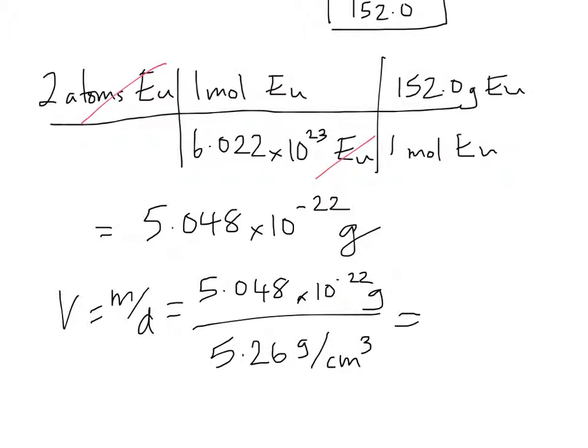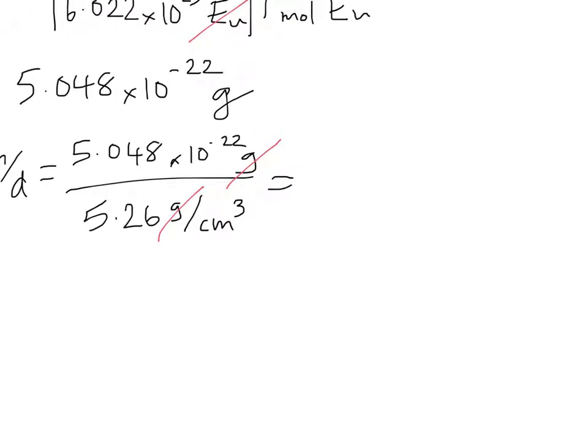And so we can see the grams cancel. We're left with 1 over 1 over centimeters cubed. So that's just going to have units of centimeters cubed. And if we crunch the numbers, we get a very small 9.597 times 10 to the minus 23rd centimeters cubed.